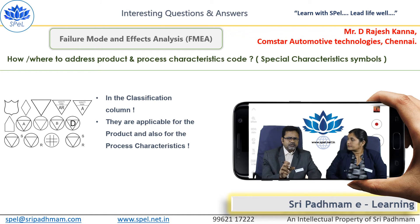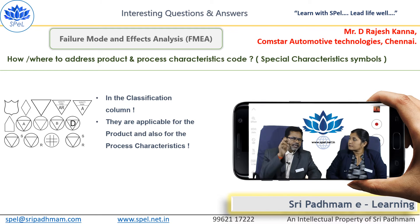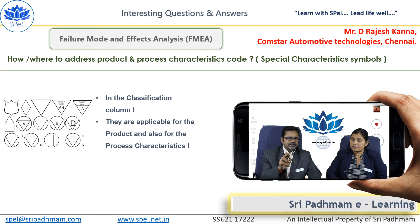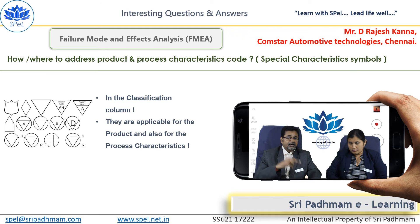Answering straight to this question: they have to appear. The symbols must be appearing in the classification column. And the symbols are applicable not only for the product characteristics but also for the process characteristics — relevant process characteristics.